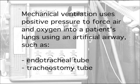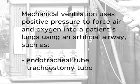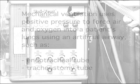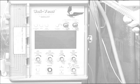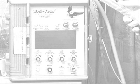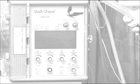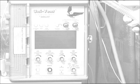Mechanical ventilation uses positive pressure to force air and oxygen into a patient's lungs. Positive pressure ventilators require an artificial airway such as an endotracheal or tracheostomy tube. No matter the type, size, or operation of a mechanical ventilator or manual resuscitation bag, certain variables apply in all circumstances. This module will provide an overview of key concepts for the modules to follow.